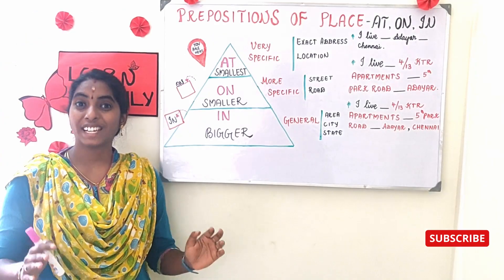Prepositions are categorized under many bases — prepositions of place, prepositions of time, manner, position, and so on. What I have chosen today is prepositions of place, and under that, the most confusing three: 'at,' 'on,' and 'in.'